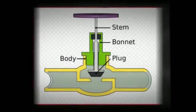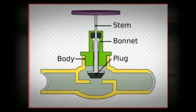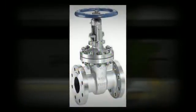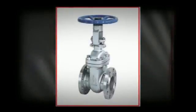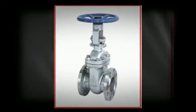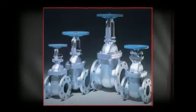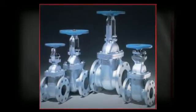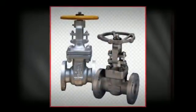Another type of bonnet construction in the gate valve is the pressure seal bonnet. This construction is adopted for valves for high-pressure service, typically in excess of 2,250 pounds per square inch. The unique feature of the pressure seal bonnet is that the body-bonnet joint seal improves as the internal pressure in the valve increases, compared to other constructions where an increase in internal pressure tends to create leaks in the body-bonnet joint.